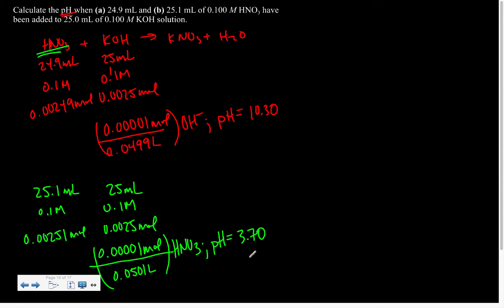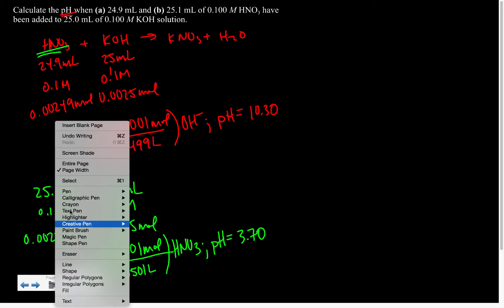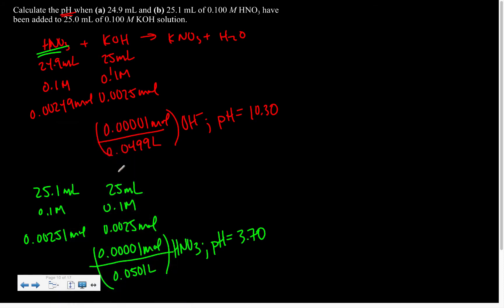Which means that the pH calculation is simply negative log of that concentration, which is 3.70. So one thing to notice is look at the pH spread over two-tenths of a milliliter, which indicates that really long rise on a titration curve.